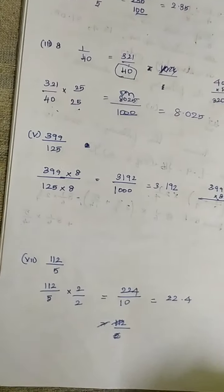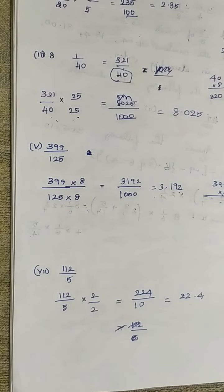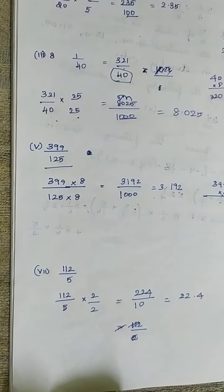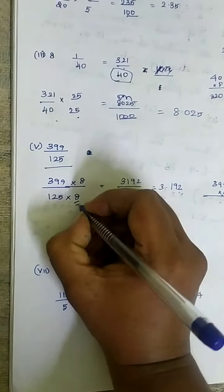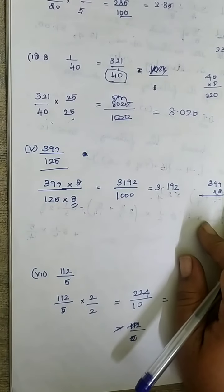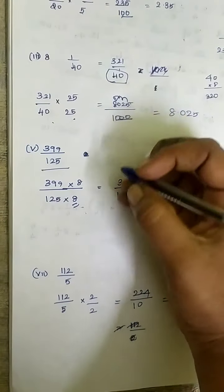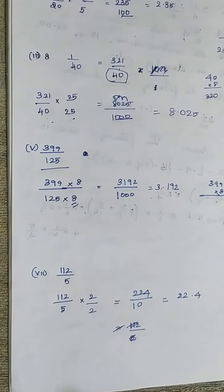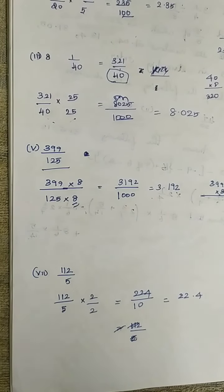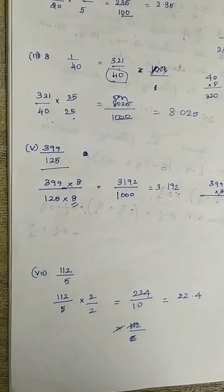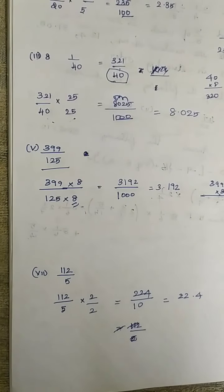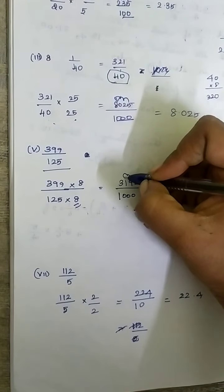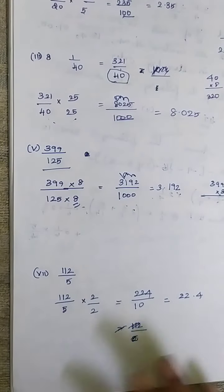Problem number 5: 399 divided by 125. You have to make the denominator 125 a multiple of 10, 100, or 1000, so I am using the number 8. When you multiply 125 by 8 you will get 1000. So the numerator is also multiplied by 8. 399 multiplied by 8 is 3192. Now we have a fraction with denominator 1000, so we move 3 digits towards the left. The answer is 3.192.